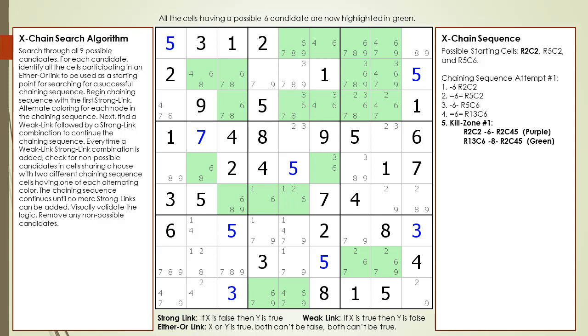So just like the Turbot fish is a fancy name for an x-chain sequence having 4 nodes and 3 links, a sashimi x-wing is just a fancy name for a type of x-chain sequence where the 4th node in the chaining sequence is a group node sharing a 3x3 block with some target candidates to kill in the kill zone.